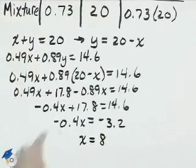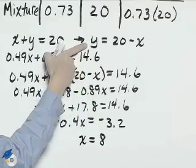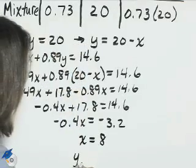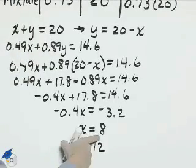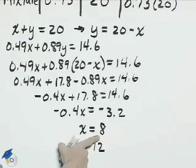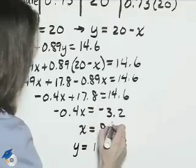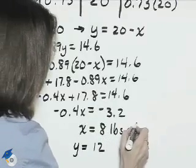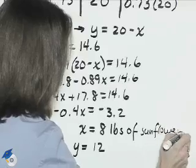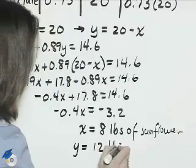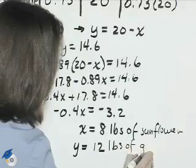Then to solve for Y, we can go right back here, Y equals 20 minus X. So Y is 20 minus 8, or 12. Our answers will be 8 pounds of the sunflower seeds and 12 pounds of the gourmet birdseed.